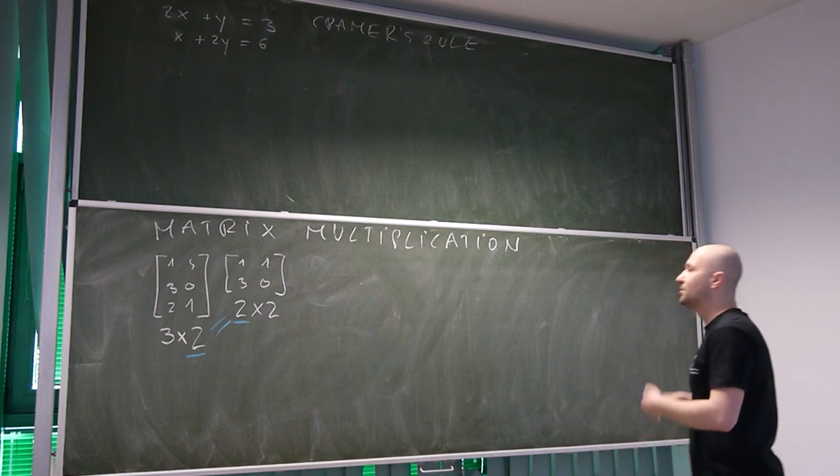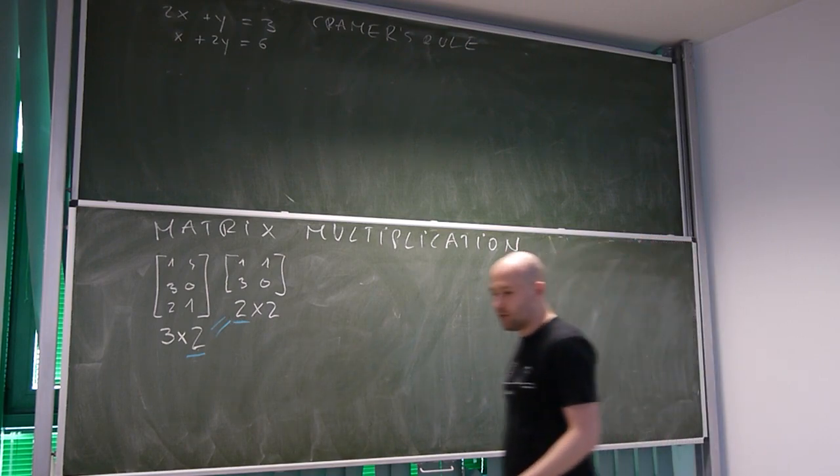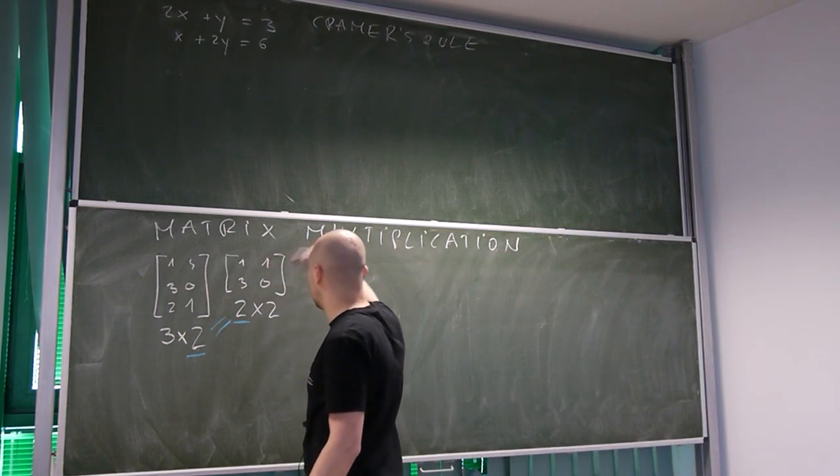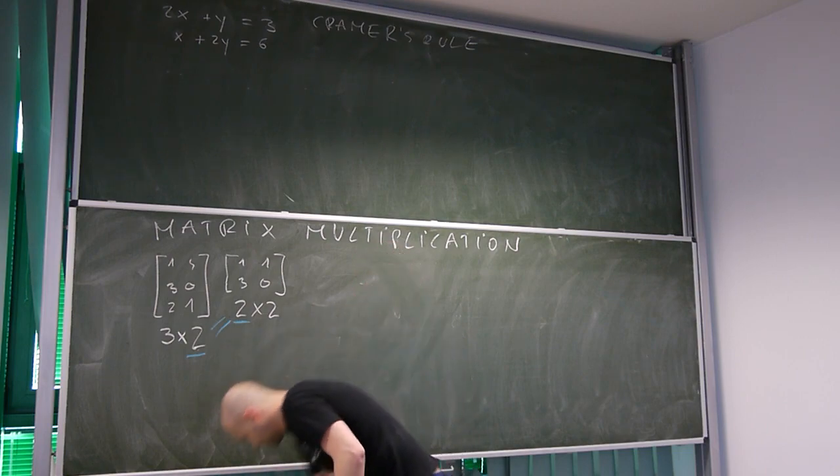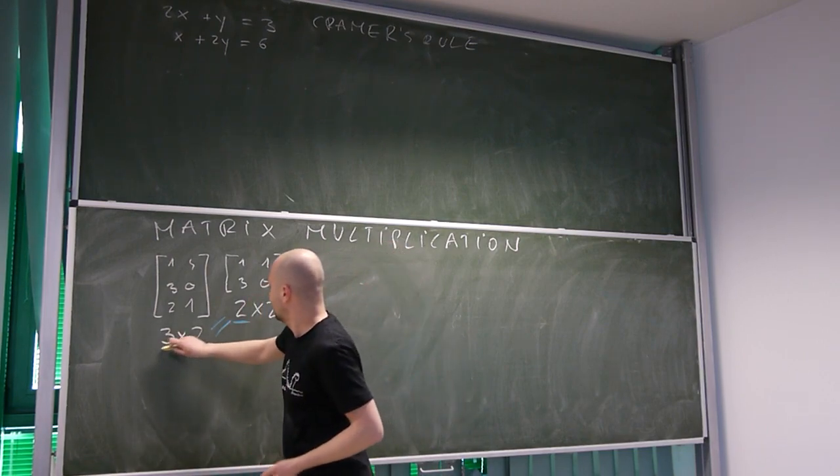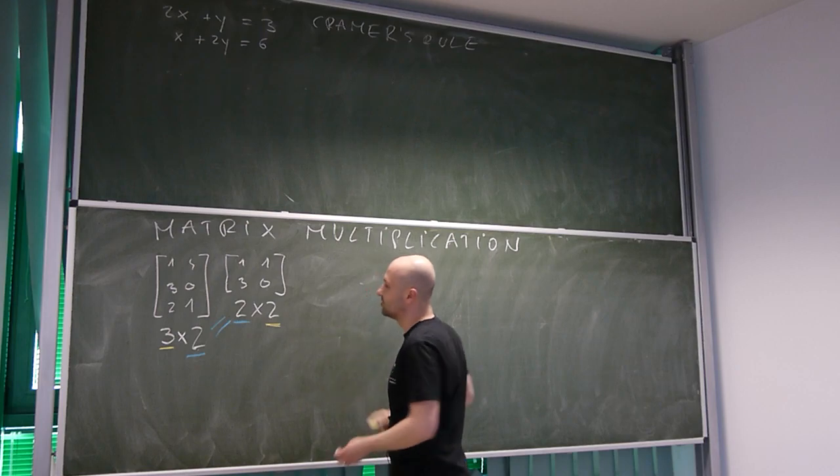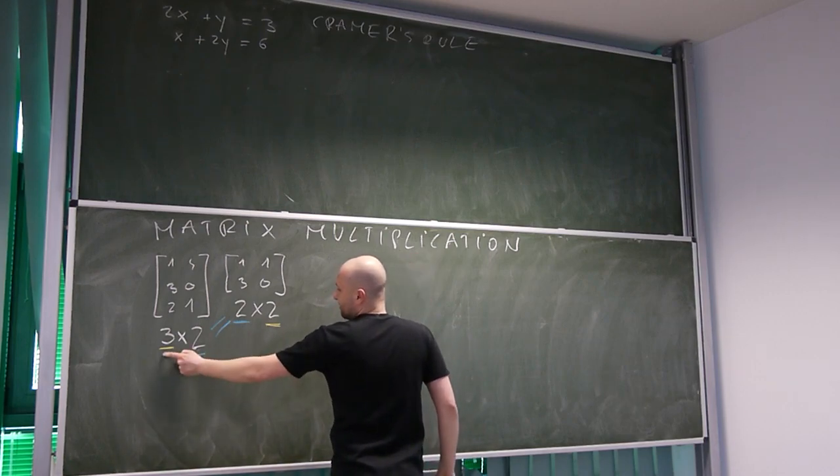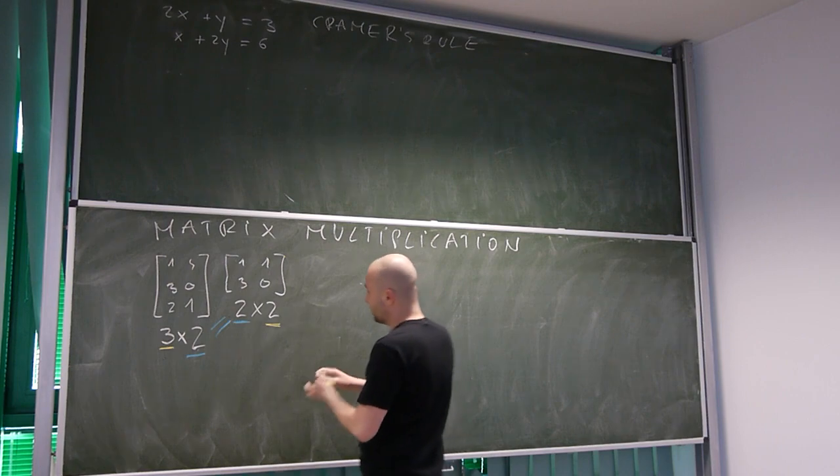Now, what will be the dimension of matrix that's going to be a product of these two? Well, three by two. We always take those dimensions at the very end.